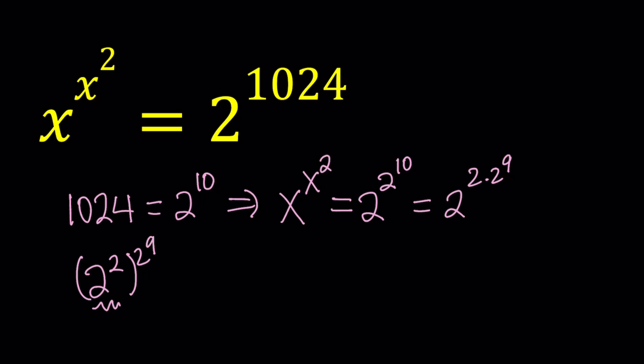So I can write this as 2 to the power 2 to the power 10. It can also be written as 2 to the power 2 to the 2nd times 2 to the 8th. And now I can separate this part. So I can write this as 2 to the power 2 to the power 2 to the power 2 to the 8th. And 2 to the 2nd power is 4. So we can write this as 2 to the 4th to the power 2 to the 8th.